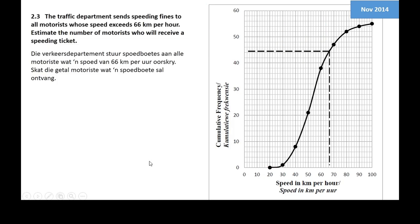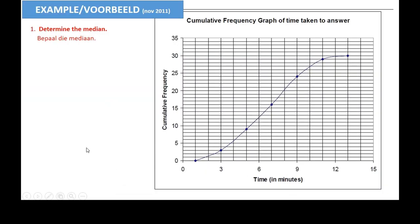For the speeding fines question: the traffic department sends fines to motorists whose speed exceeds 66 km/h. Go to 66 on the horizontal axis, up to the ogive, and read left to get 44. That means 44 motorists had speeds less than 66 km/h. The total is 55, so subtract 44 to get 11 motorists who will receive a speeding ticket.